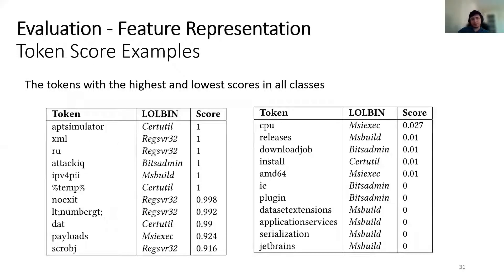First, we show some examples from the token score dictionary we generated using the labeled samples. Higher scores identify samples that are more likely to be malicious. Among the suspicious tokens, we observe APT simulator and ATT&CK IQ, which are keywords indicating red team activity that were captured and labeled as malicious. Certutil commands containing the token 'temp' are always found to be malicious. And we observe keywords that typically appear in the regular software development or sysadmin lifecycle, like 'releases' or 'JetBrains', so they are less likely to be malicious. The scores generated based on available labeled samples are used in feature generation to represent the command lines.